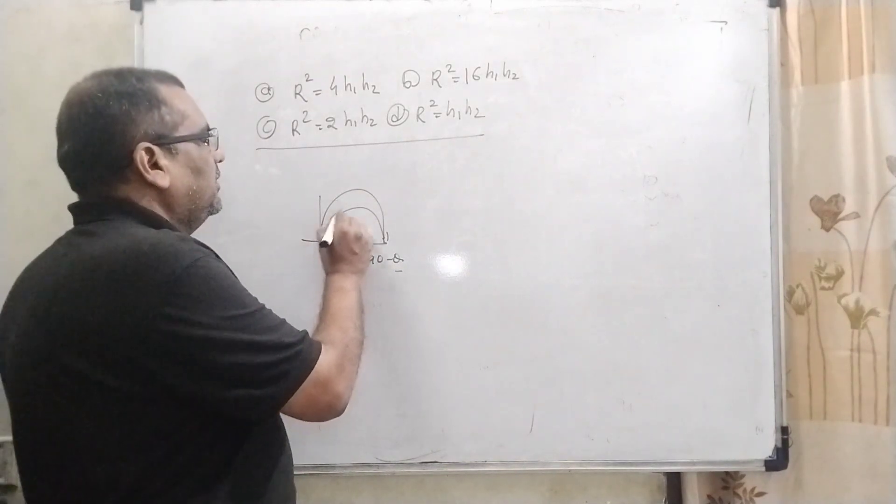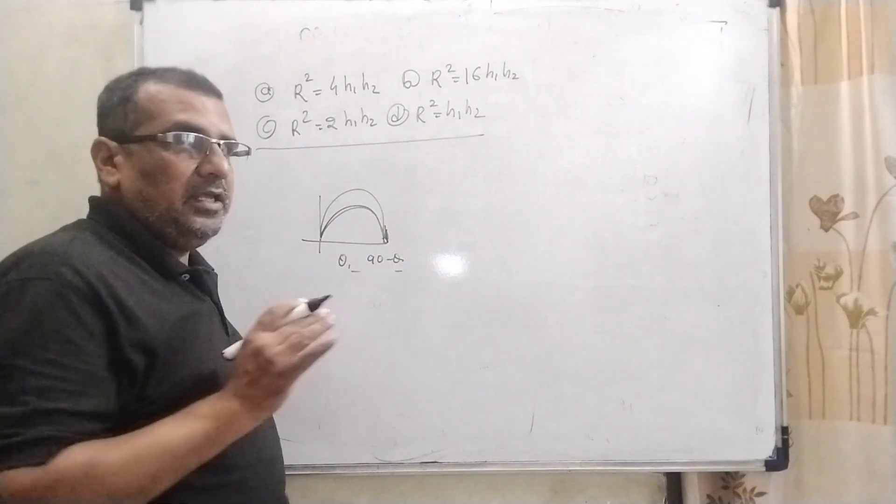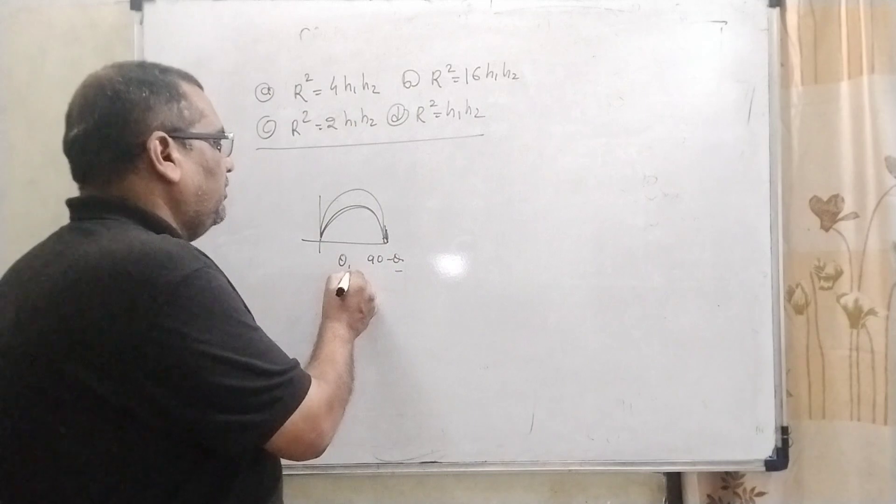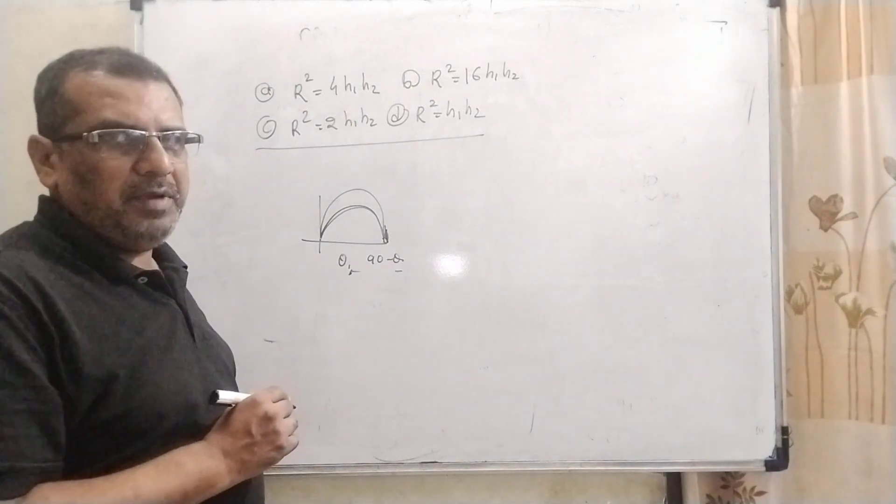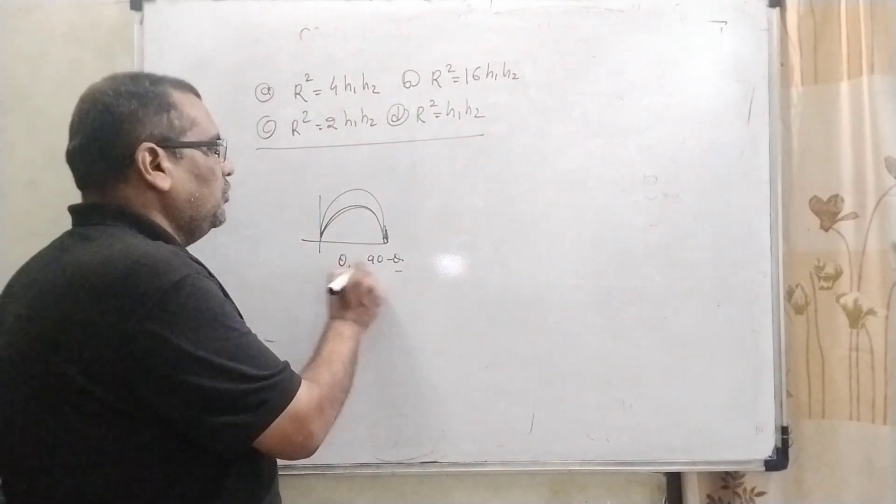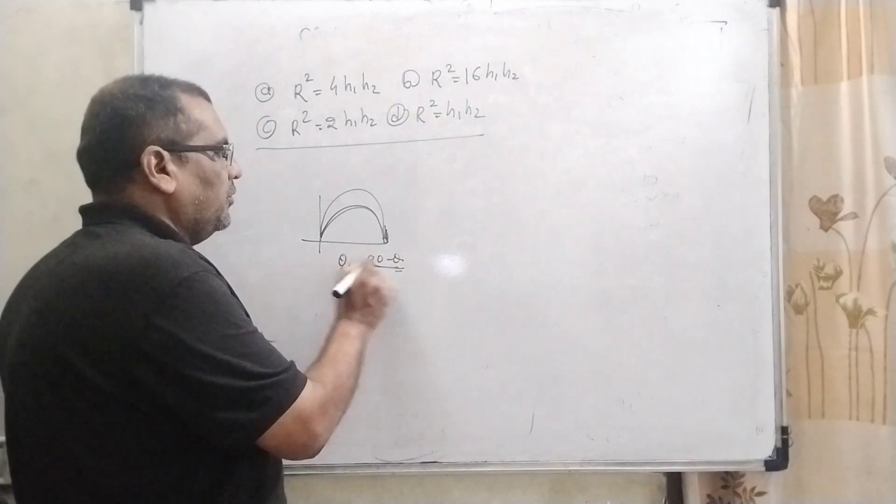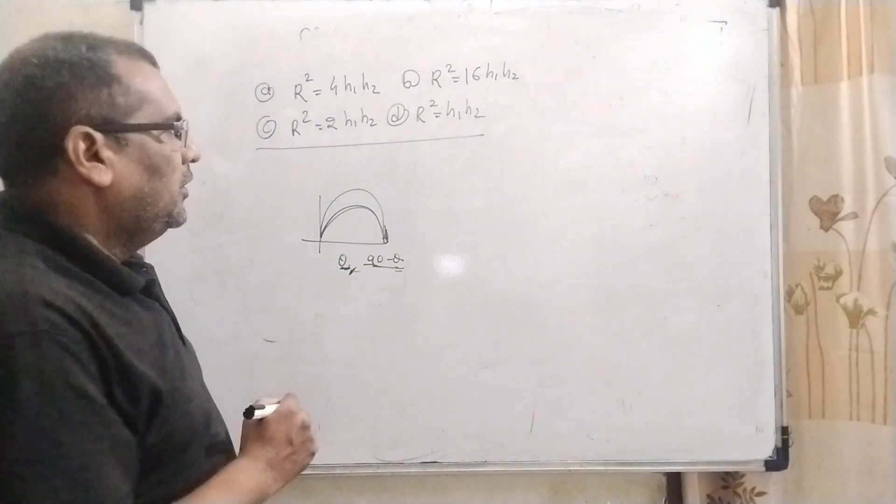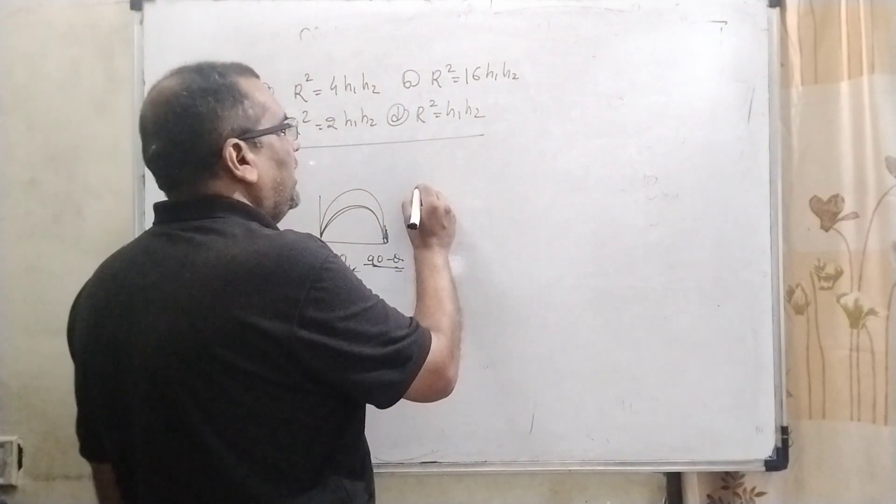Here there is simple things. When we project to get the same range, the angle should be theta and 90 minus theta. At the two conditions of angle of projection, we get the same range. For the same range, you know that